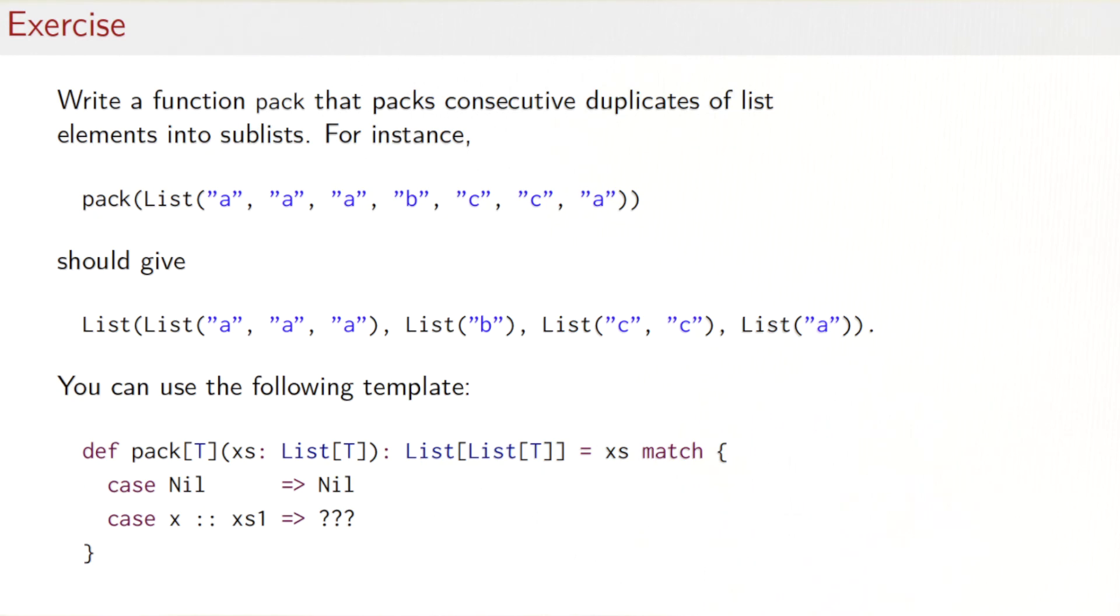So let's apply the functions that we've seen so far in an exercise. The task is to write a function pack that packs consecutive duplicates of list elements into sub lists. So if we apply pack to this input list here, we would expect to get back a list of lists where the first sub list is formed from the three consecutive A's here. The second sub list has just a single B, the third sub list has the two consecutive C's and the final sub list has the trailing A here. The idea is to use a template like this one here. We have a defined pack to be a generic function over type lists of T returns a list of list of T. Obviously, if the list is empty, then that's what we would expect back. So the only case to handle is really this case here. If the list is non empty, what do we do?